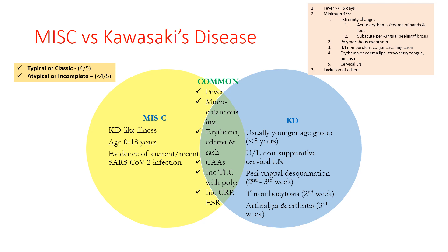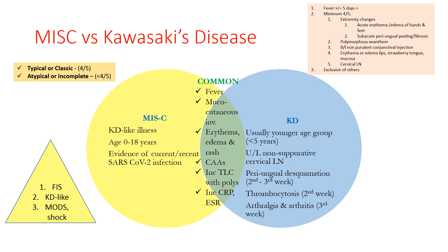A Kawasaki disease-like presentation can be one of the presentations of MIS-C. MIS-C can have basically three kinds of presentations: a febrile inflammatory state, a Kawasaki disease-like presentation, and a typical multi-organ dysfunction with shock. MIS-C is typically seen in the age group 0–18 years, and there will be evidence of current or recent SARS-CoV-2 infection.